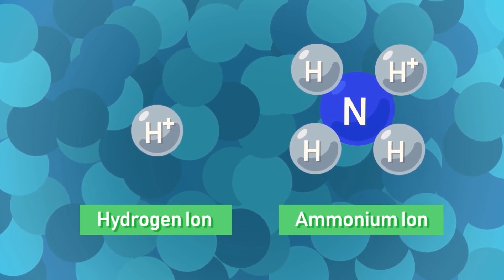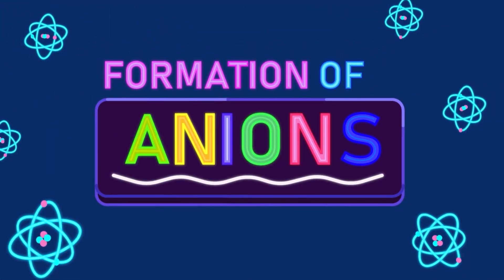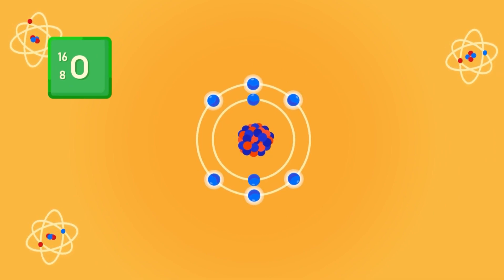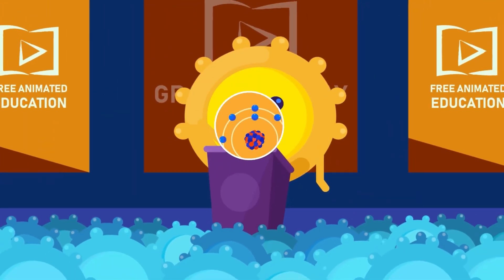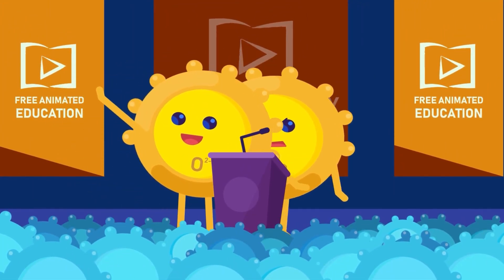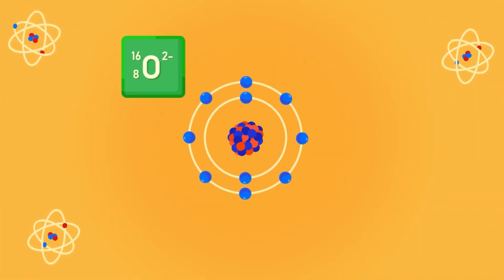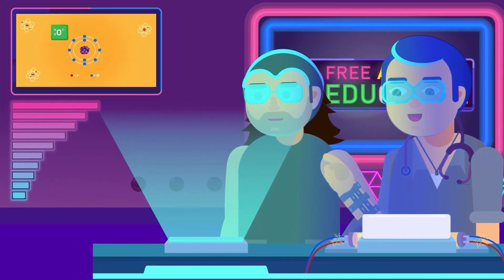Formation of anions: Generally, atoms of non-metals have more than four valence electrons, therefore they tend to gain electrons to form anions. In this way they attain the electronic configuration of noble gases. When an atom gains electrons, it has more electrons than protons.